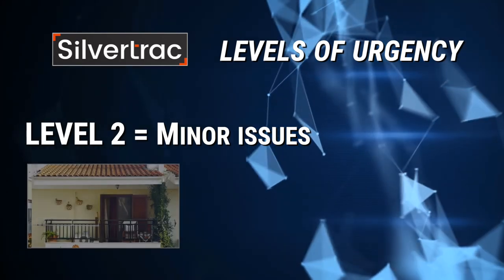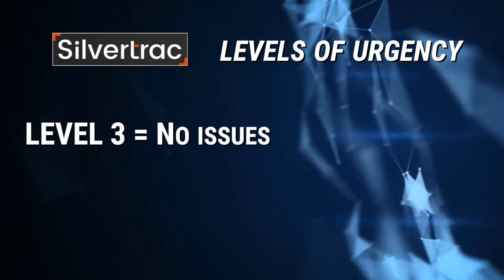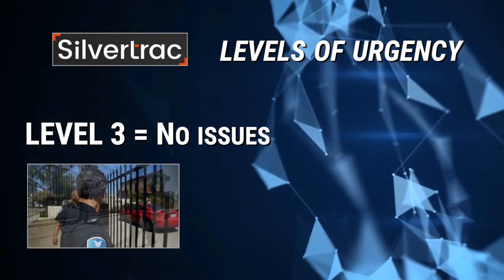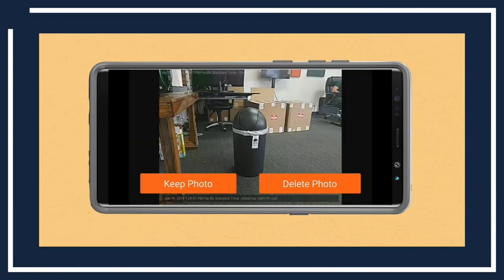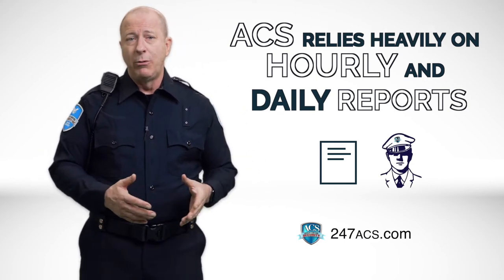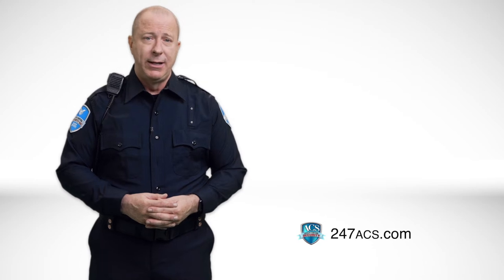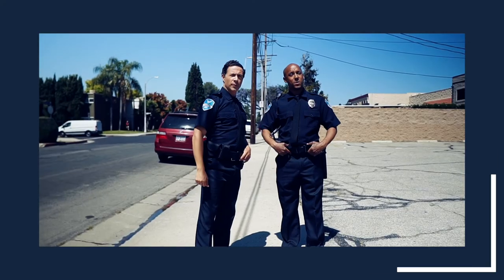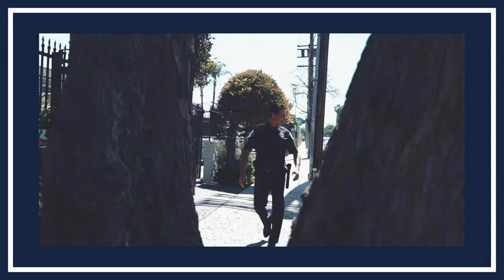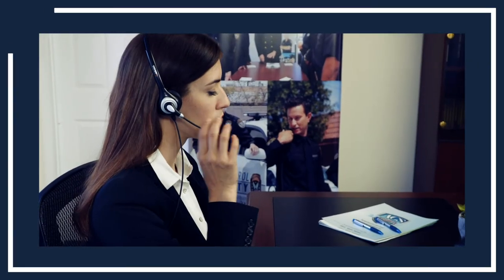Select level two for minor issues, such as a door left open, trash in the area, or lights left on or off. Select level three if there are no issues to report — the property was safe, nothing unusual took place. Along with your written report, you can add photos and audio recordings. Then submit your report and you have completed your reporting duties. We rely heavily on the hourly and daily electronic reports we receive from our security officers, as these reports are the only way for us to track the status of a property. By tracking all properties, we also make sure that our officers are safe and that all properties are under control. When you're ready to leave the site, tap on Leave Site and then log out, then call the dispatch hotline to clock out.